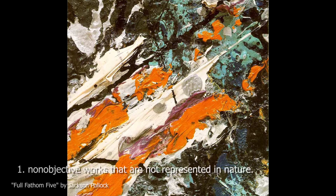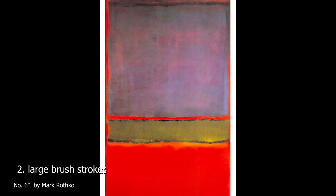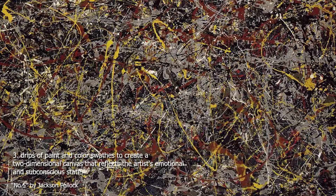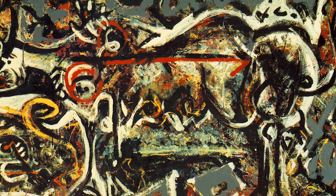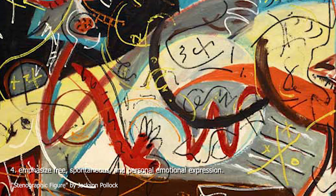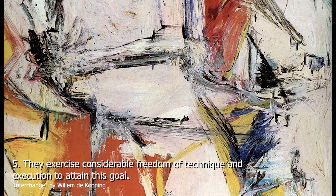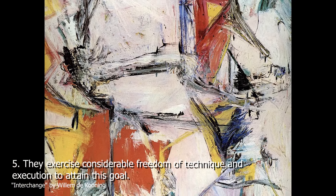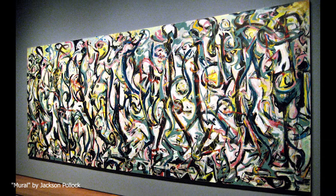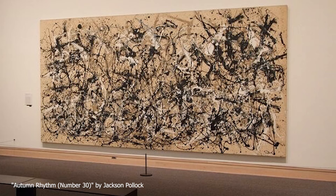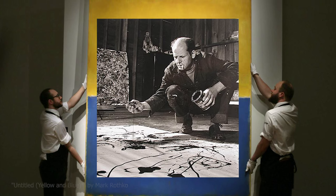Here are some main characteristics that make abstract expressionism what it is. Number one: non-objective works that are not represented in nature. Number two: large brushstrokes. Number three: drips of paint and color swatches to create a two-dimensional canvas that reflects the artist's emotional and subconscious state. Number four: emphasize free, spontaneous, and personal emotion expression. Number five: they exercise considerable freedom of technique and execution. Abstract expressionism is best known for large-scale paintings that break away from traditional processes, often taking the canvas off the easel and using unconventional materials such as house paint.